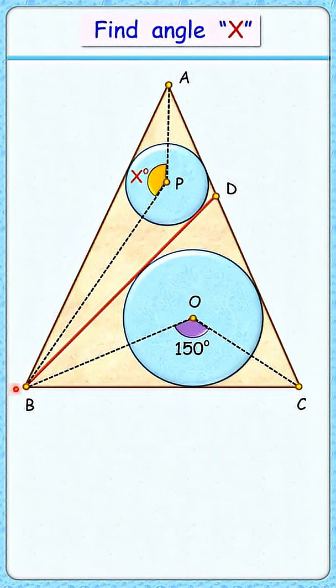Given is triangle ABC with line segment BD dividing it into two parts. The incircles for these two triangles are drawn. The purple angle measures 150 degrees. With this limited data, we need to find the value of angle X.